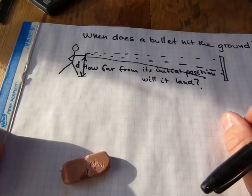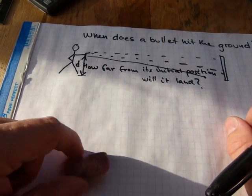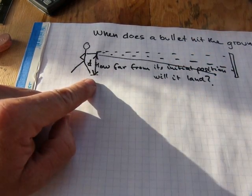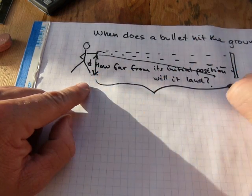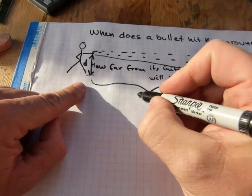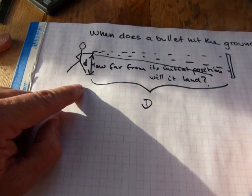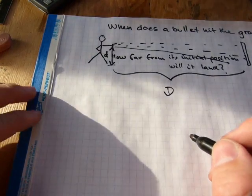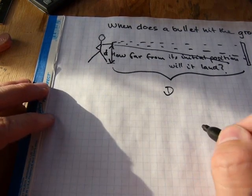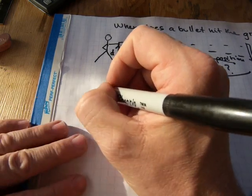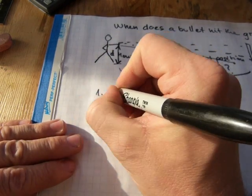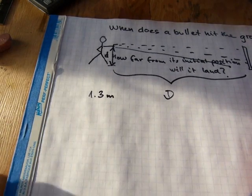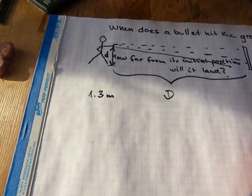So to calculate this distance where it hits the ground, it's an uppercase D, you need to know this lowercase d first, the height at which it is fired. You're gonna have to measure it. Say it is 1.3 meters, or four feet five inches or so.